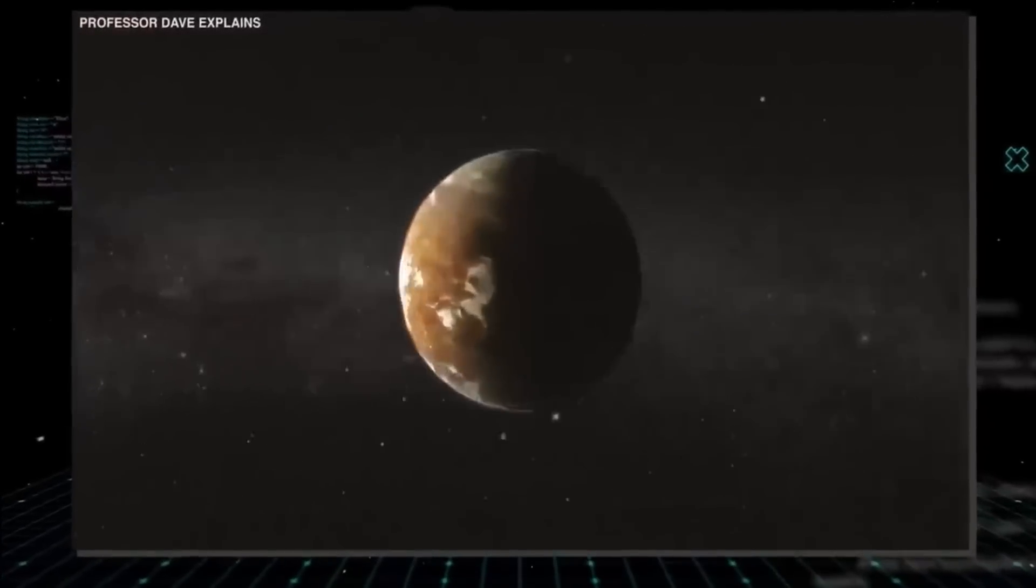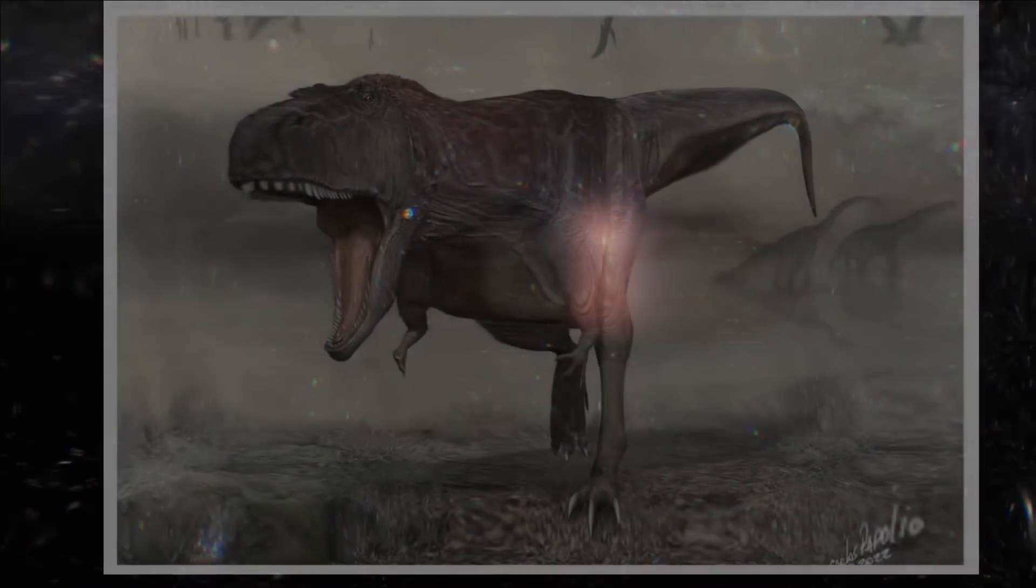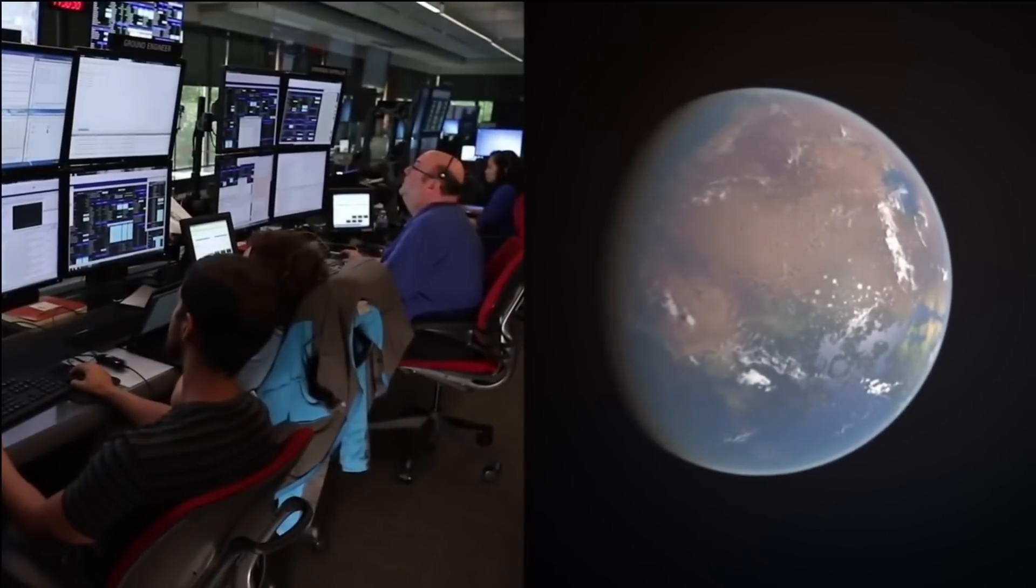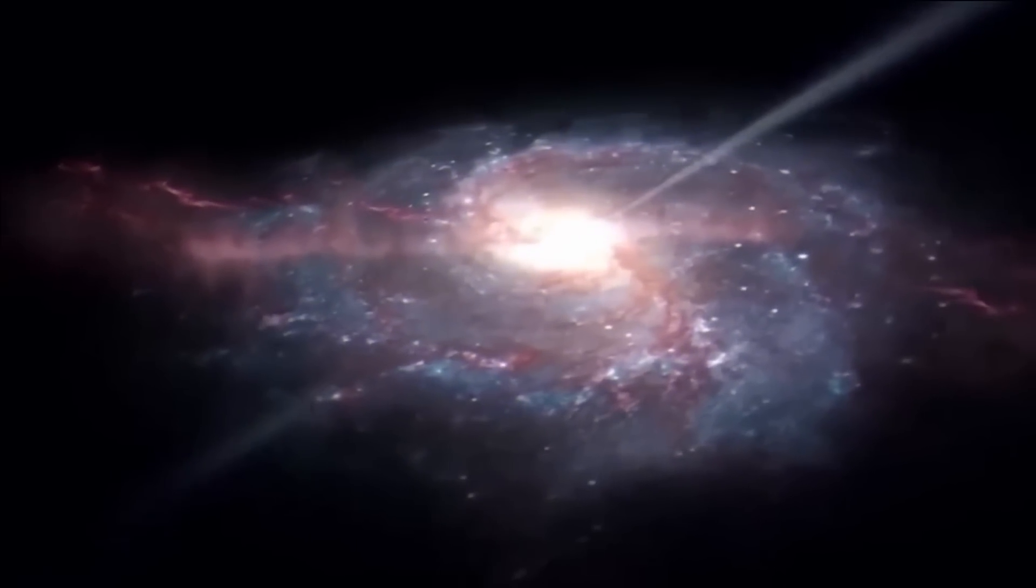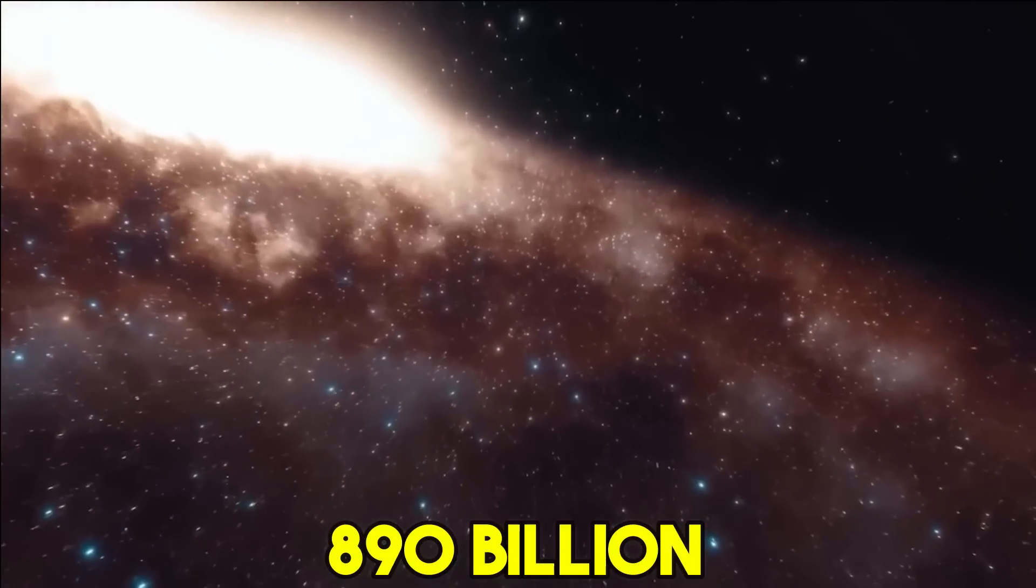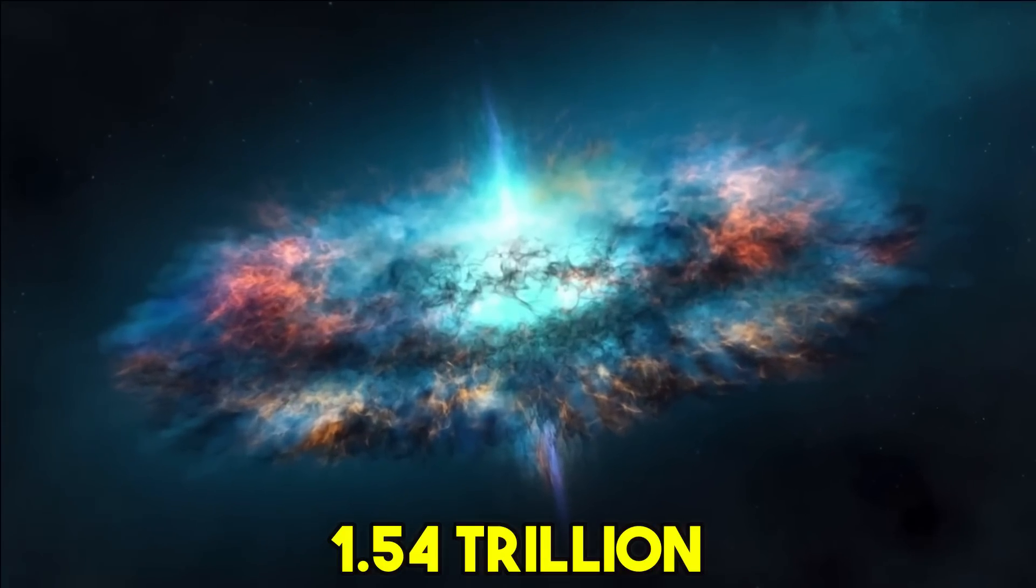For perspective, the last time the solar system completed a revolution around the Sun, dinosaurs were still roaming across the surface of the Earth. Scientists are not exactly sure about the weight of the Milky Way galaxy. But the most accurate estimates suggest it is somewhere between 890 billion and 1.54 trillion times heavier than our Sun.